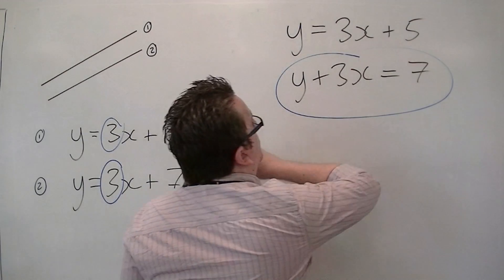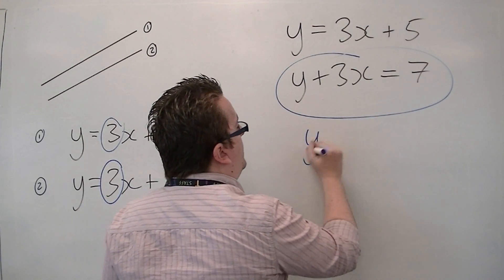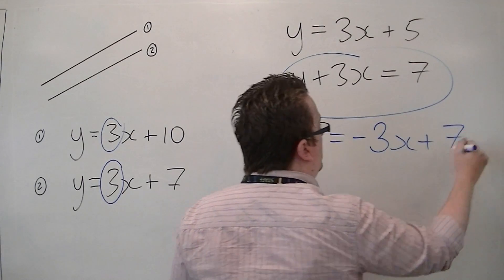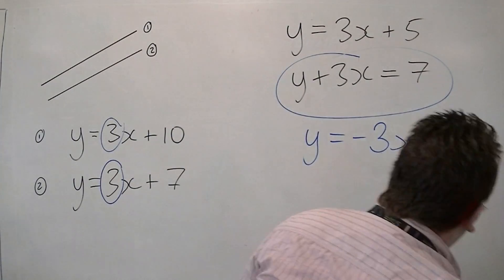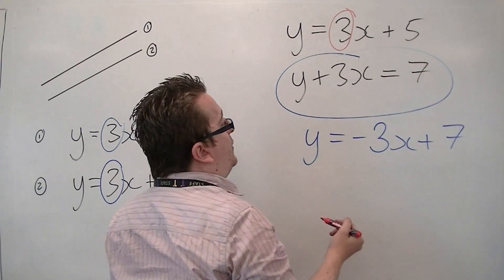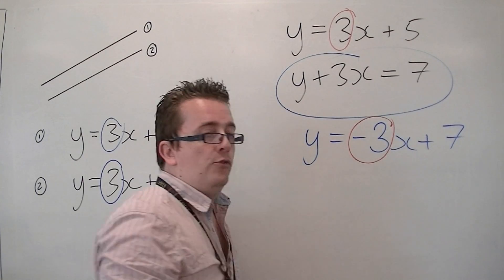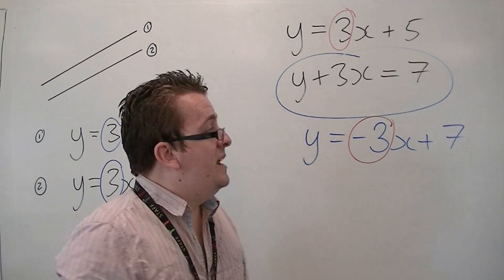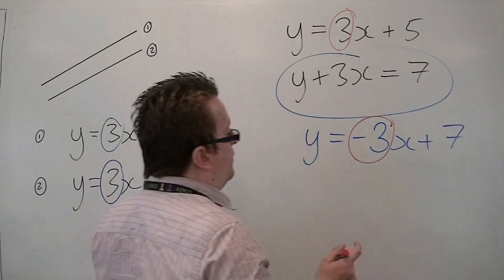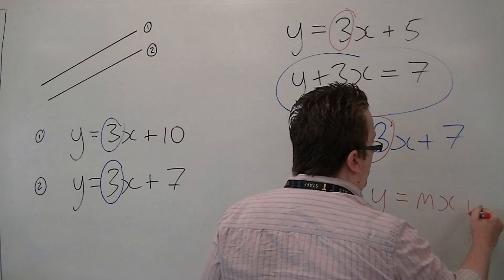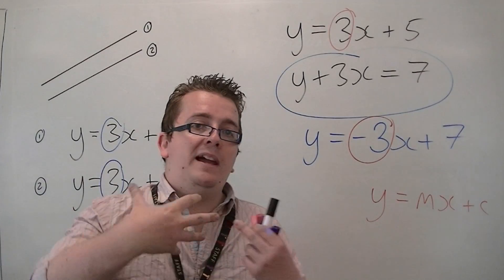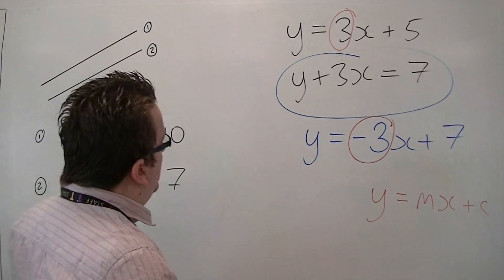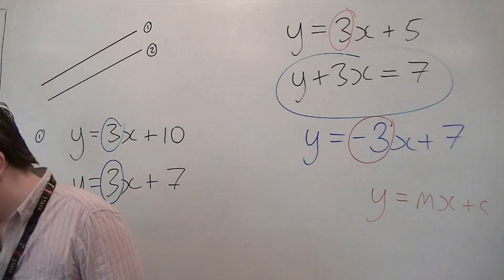This one, if you take 3x from both sides, and we get it into the format of mx plus c, then actually what we have is that we have 3 in the first equation, and minus 3 in the second equation. So, the gradients are different, and so they are not parallel. You need to make sure you've got both of the equations into the form y equals mx plus c, in order for you to be able to compare those two lines. So, these are parallel. That's how you deal with parallel lines.